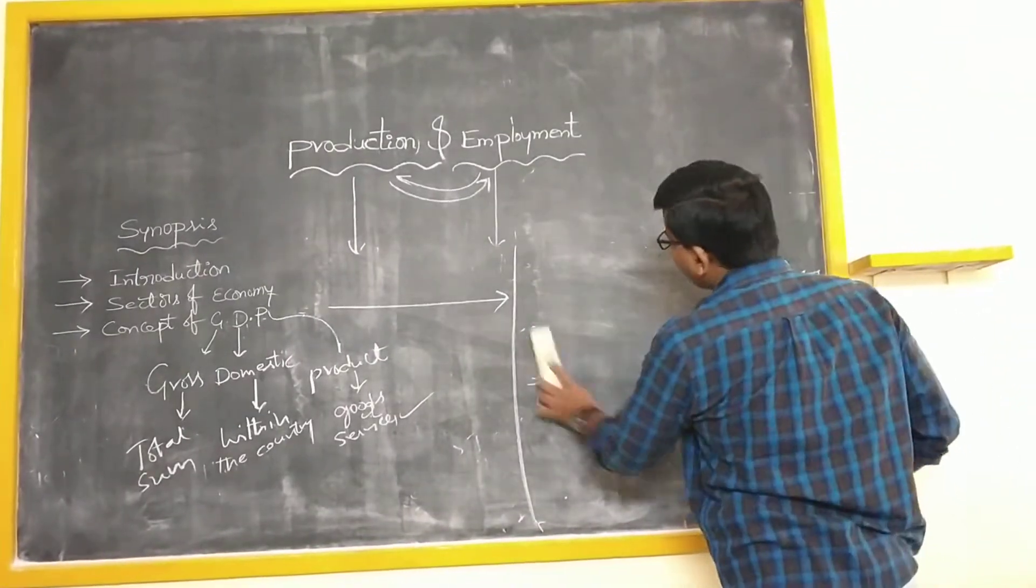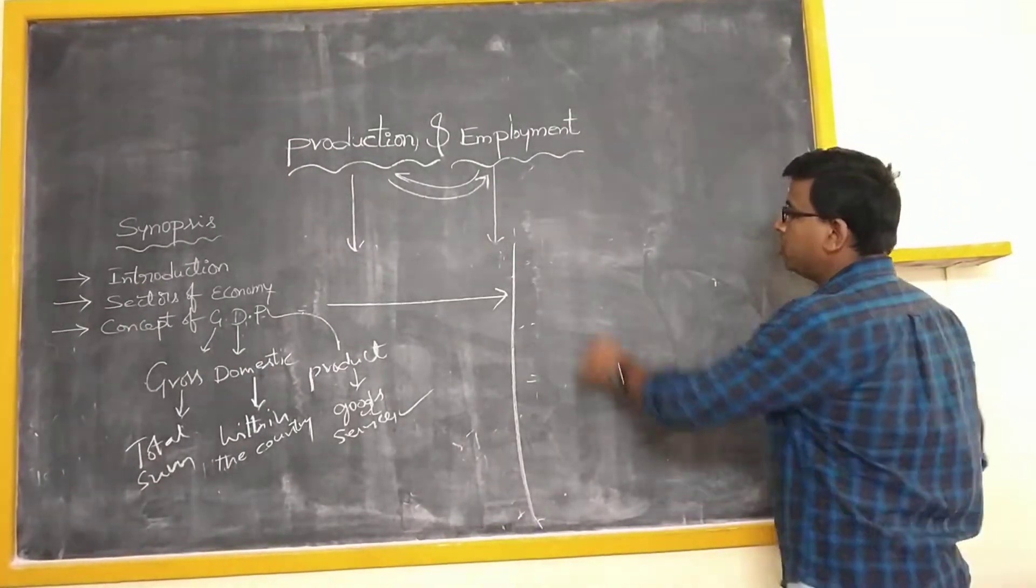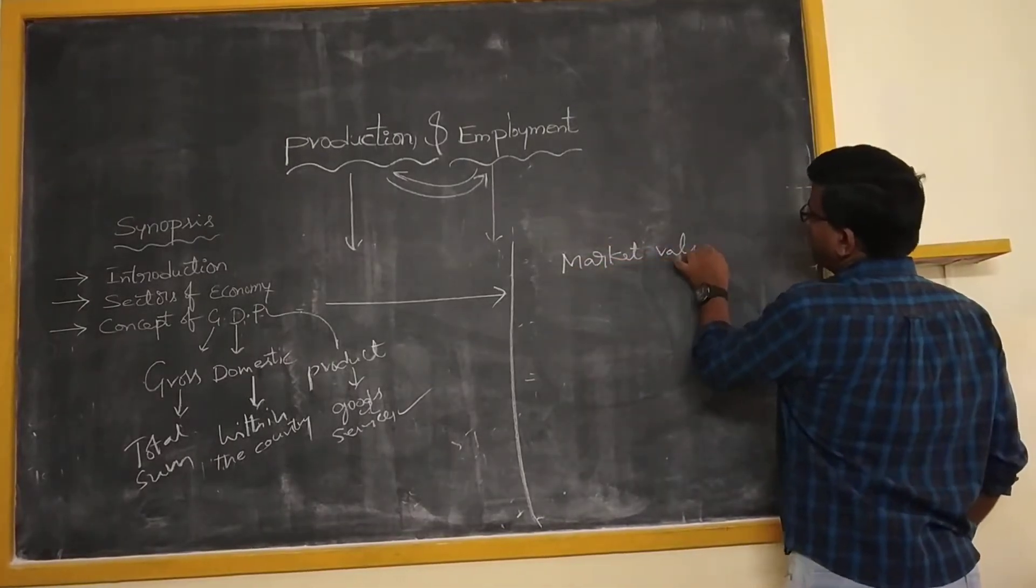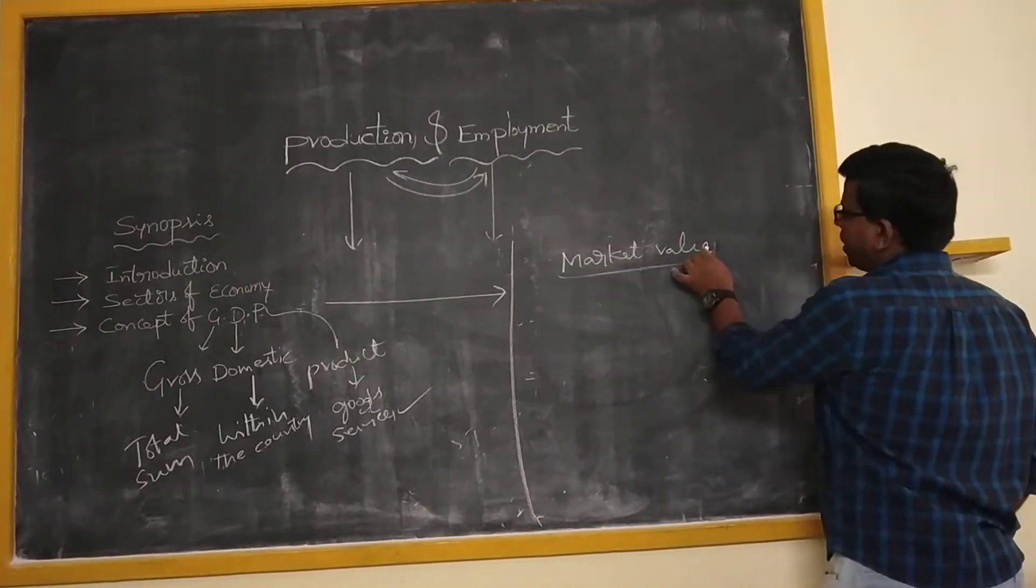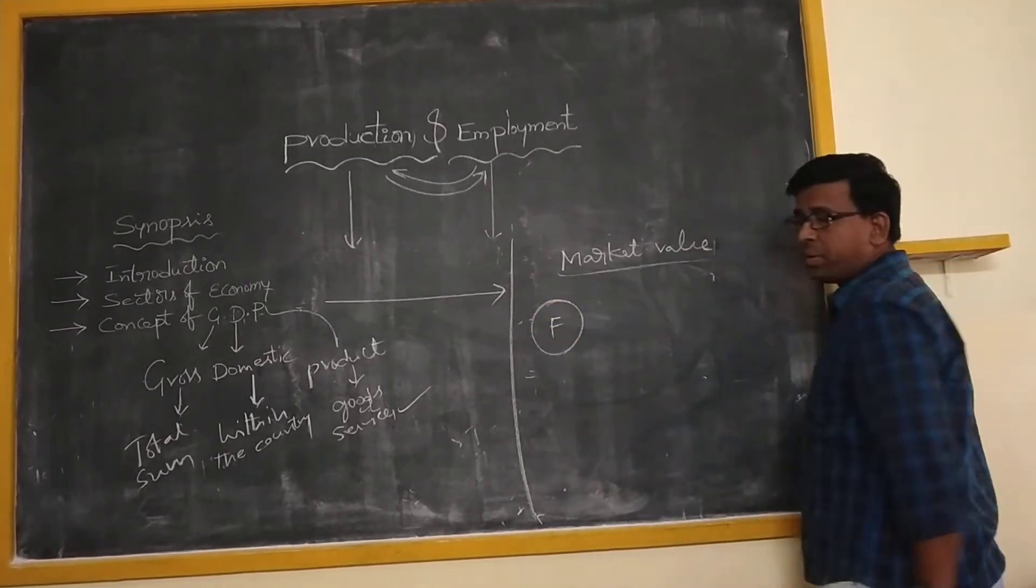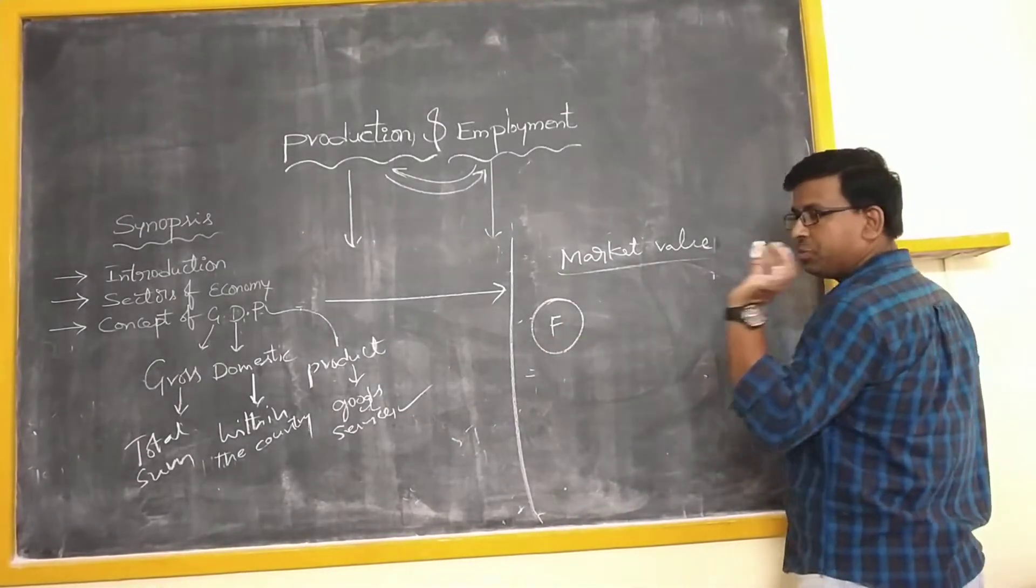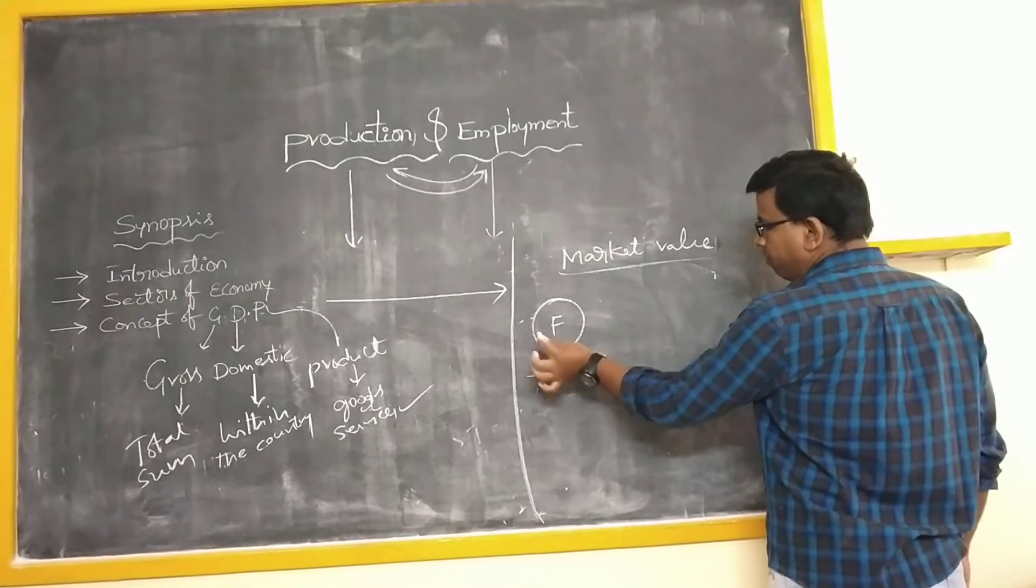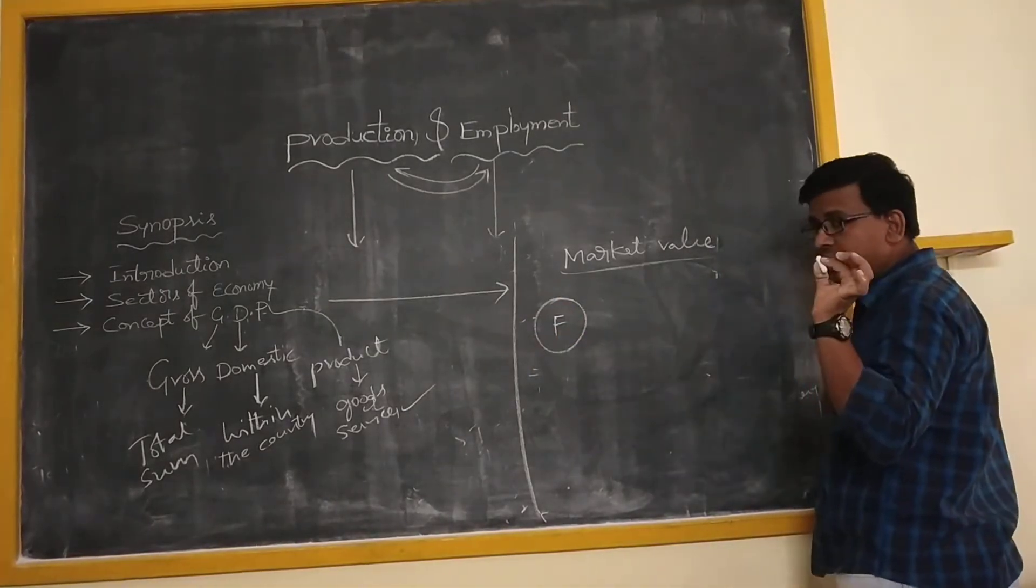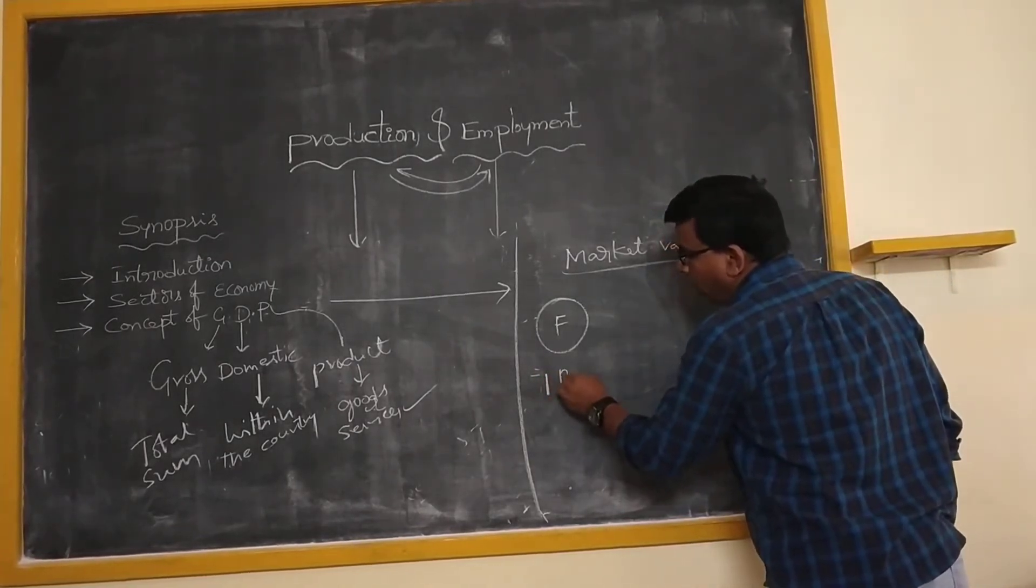Market value. What is the market value? For example, any good which is being manufactured in factory. This piece of chalk, which is being manufactured in a factory. At that factory, the price of this chalk could be one rupee.